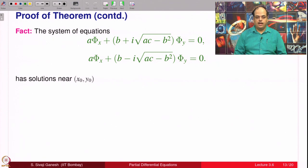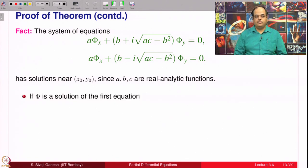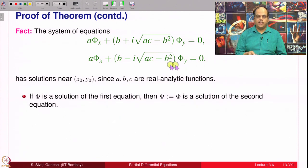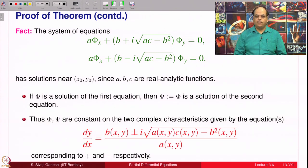Now, a fact: the system of equations has solutions near (x_0, y_0). This is where a, b, c are real analytic functions is used. We can observe: if Φ is a solution of the first equation—remember a, b, c are all real valued functions—therefore, if Φ is a solution of the first equation, Φ̄ (the conjugate of Φ, let us call it capital Ψ) is a solution to the second equation. Therefore, it is enough to solve one equation; essentially there is only one equation. But that will give us what we want because Φ is proposed as small φ + i·ψ. So you can identify a real part and imaginary part, and hopefully that forms a coordinate system.